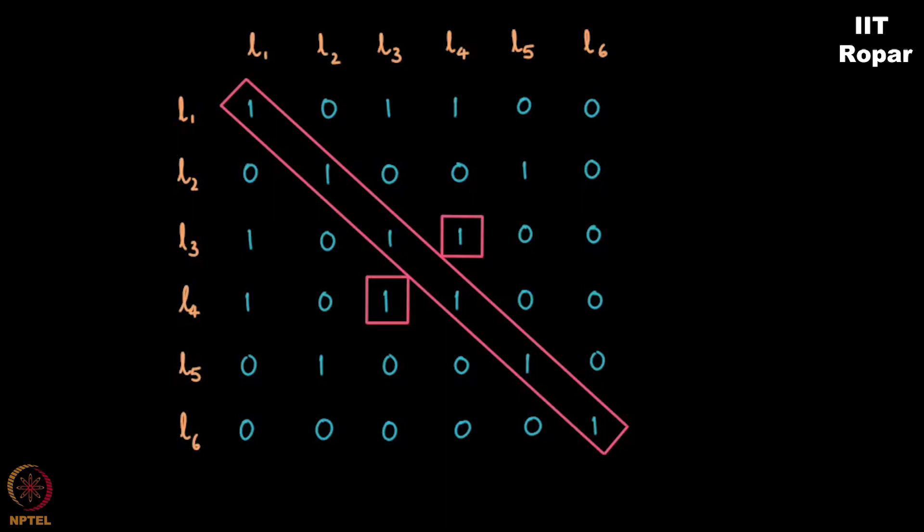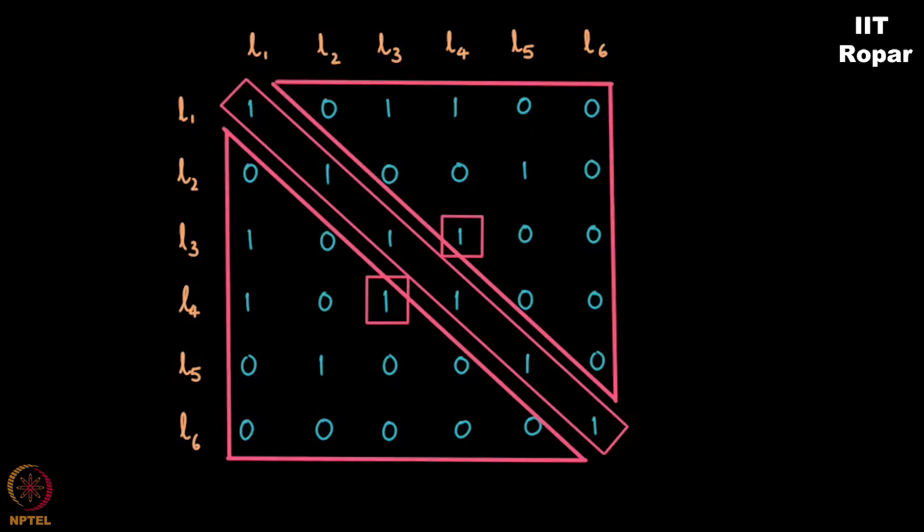Of course the diagonals have 1, or adding to that we observe that the matrix is symmetric. You see on the right side, you see below the diagonal on the left side, both are exactly the same.